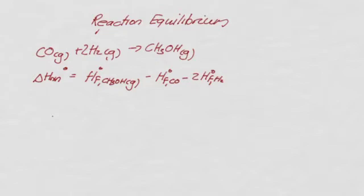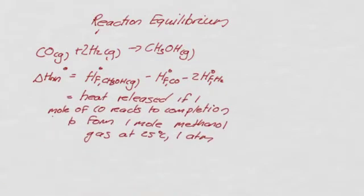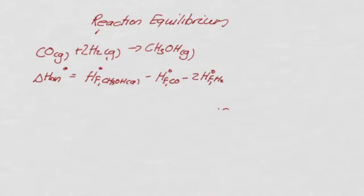What this value is, is also the heat released if one mole of CO reacts to completion to form one mole of methanol, and this reaction happens at 25°C and one atmosphere. Notice we're trying to work out reaction equilibrium constants — in other words, we presumably think the reaction doesn't go to completion — but this value here is the heat released if the reaction goes to completion.